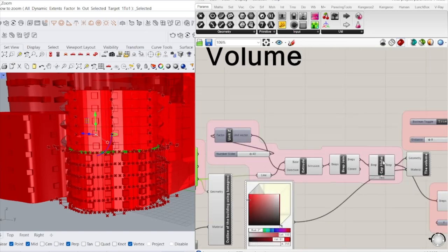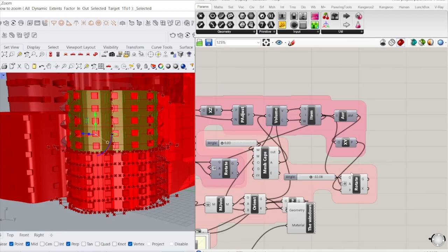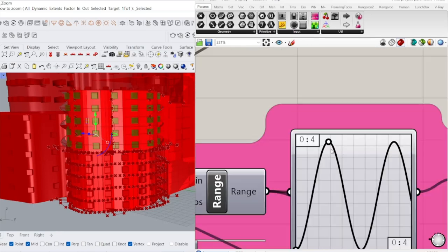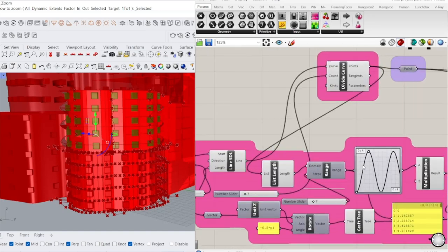And moving forward with the volume and the windows, I used two types of graph mappers. I used sine simulation and sine. The difference between these two is that the sine simulation gives us a slight flow of curvature, but the sine gives us an extreme curvature that would really show.